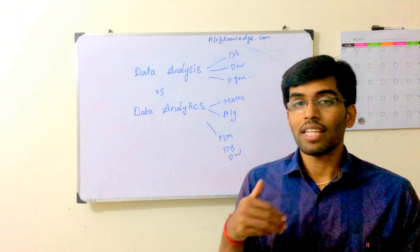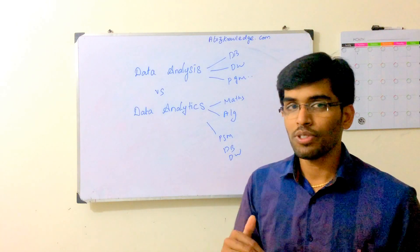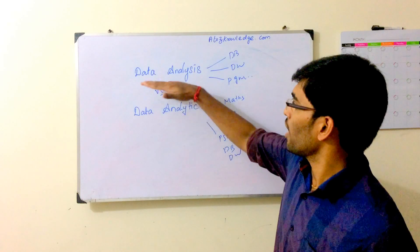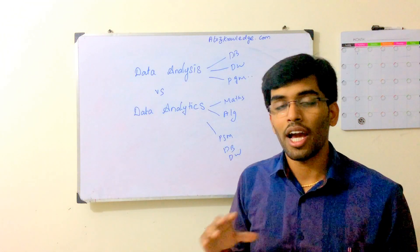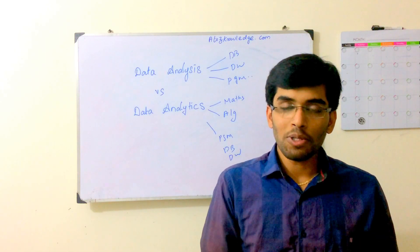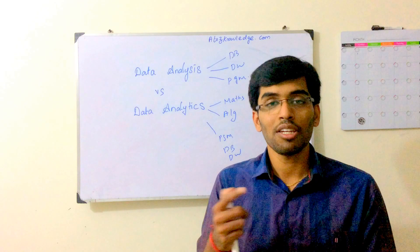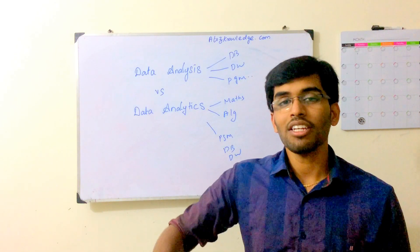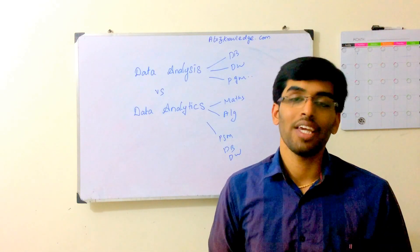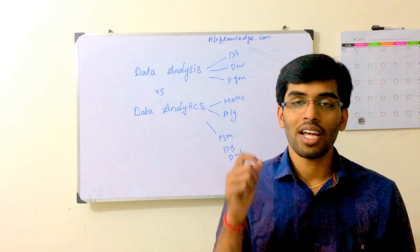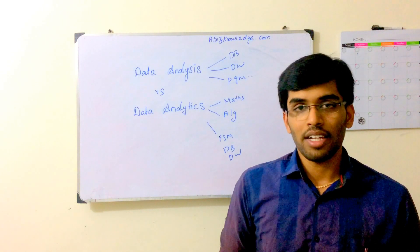The data analyst works with past data; the data scientist predicts the future. The data scientist needs the analyst, because for input data the analytics guy needs the analyst to analyze all the last ten years of data and prepare a report of what happened. Only then can the data scientist take that information, apply algorithms or predictive models, and say what is going to happen in the next year. However, there is always a probability of failure — we cannot guarantee 100% that the predictive analysis output will be correct.